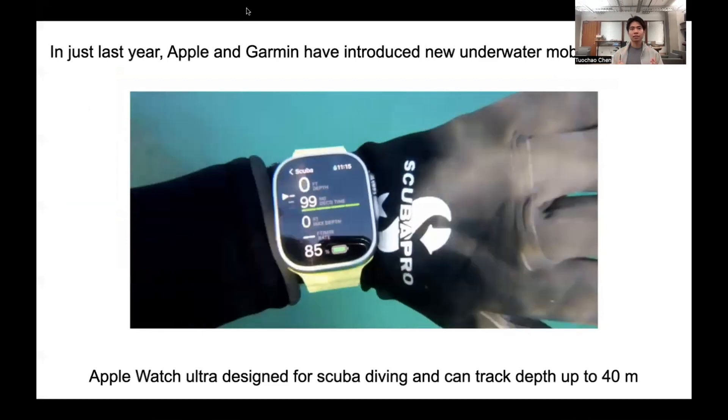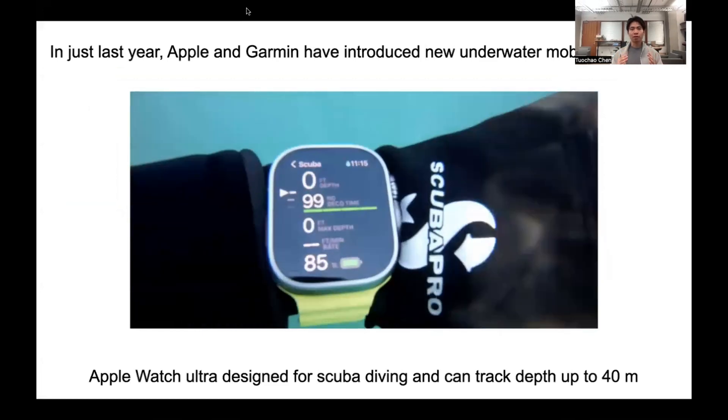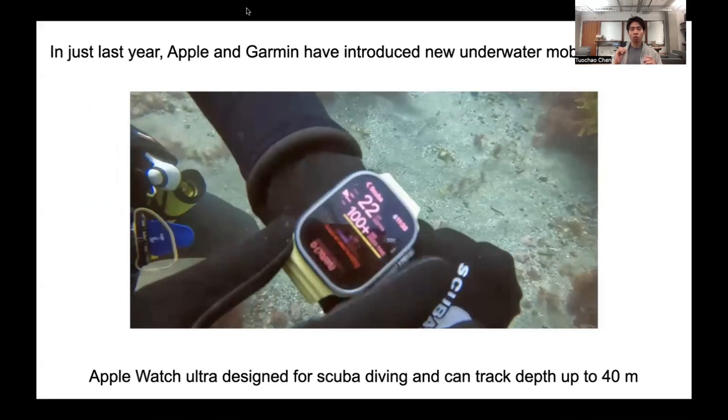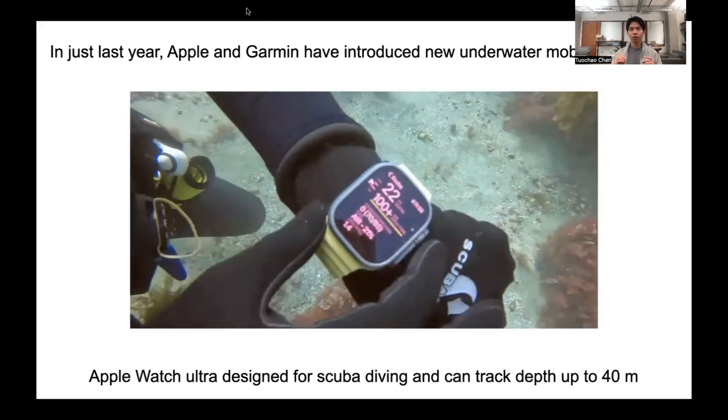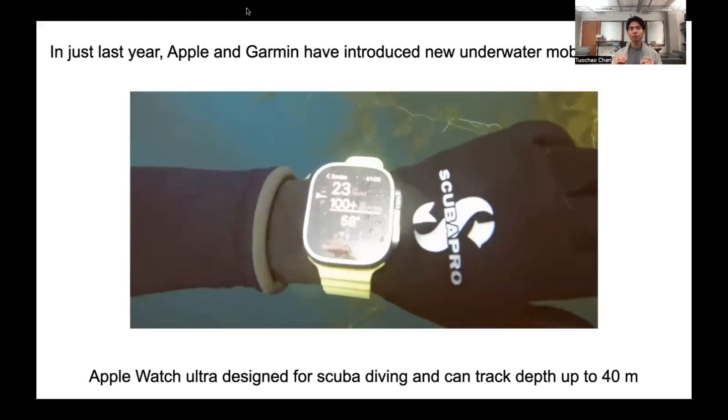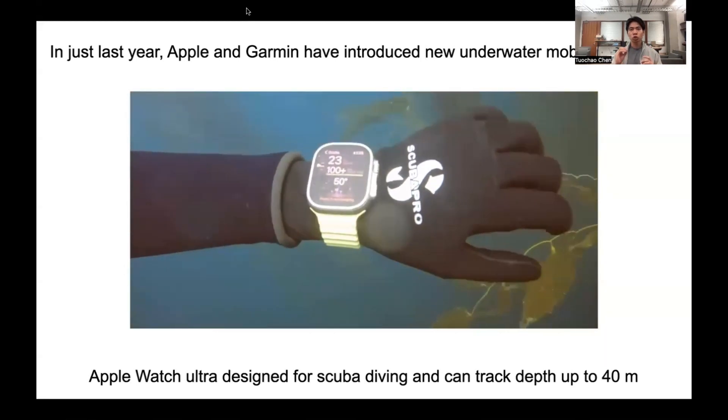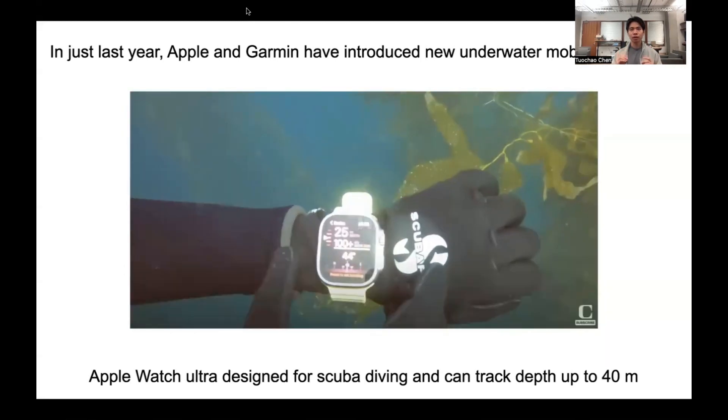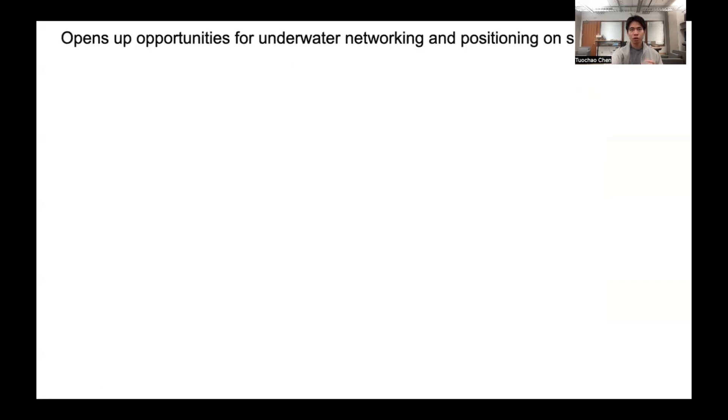In just the last year, both Apple and Garmin have introduced new underwater mobile technology. For example, the Apple Watch Ultra is designed to be waterproof to 40 meters and can precisely track the depth of a diver. These new smart devices open up the opportunity for underwater networking and positioning.